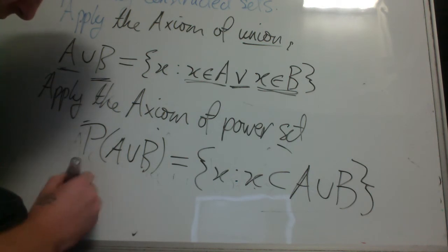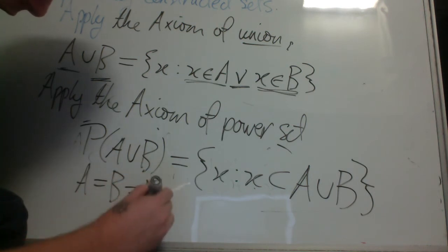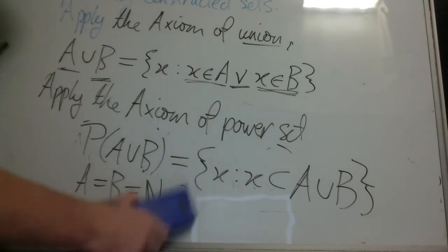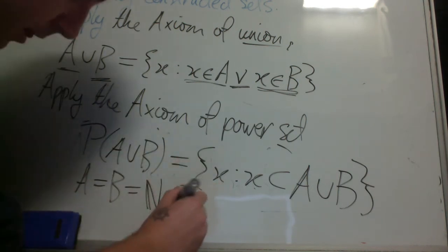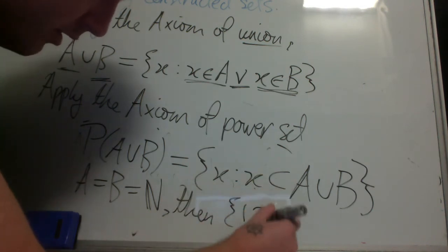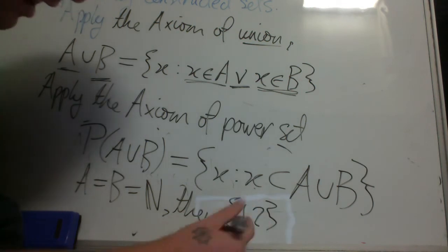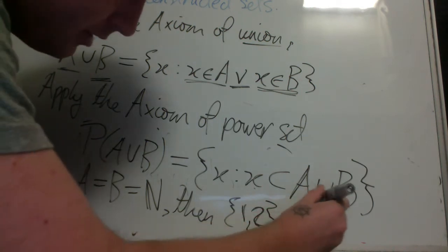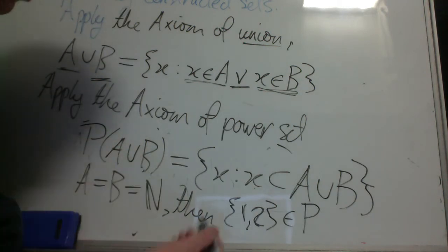So, for example, A equal B equal the natural numbers. Then the set containing 1 and 2 will be an element of the power set of the union of A and B.